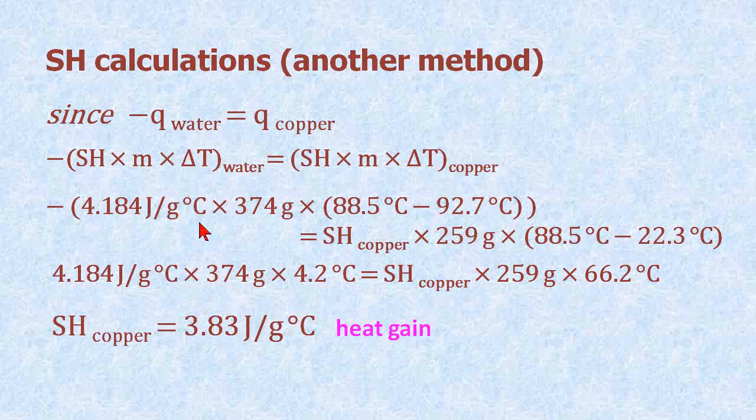You put the numbers in. The signs here work themselves out as long as you remember that one is a heat loss, one is a heat gain. So you have the negative number right here from the minus sign. You work out the numbers in these equations here. And you get these numbers down here. And you get the specific heat of the copper is, again, 3.83 joules per gram degree C, which is a heat gain.